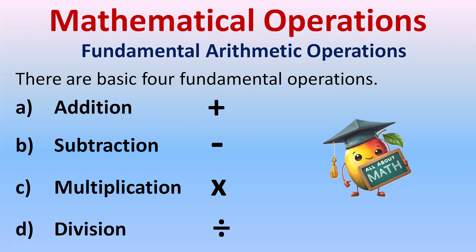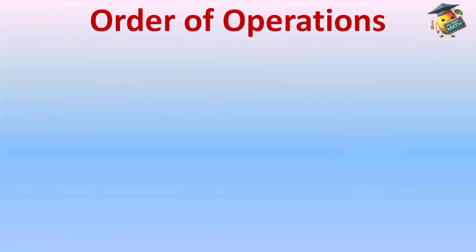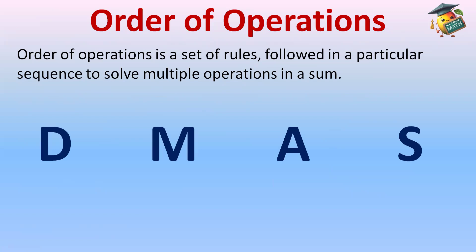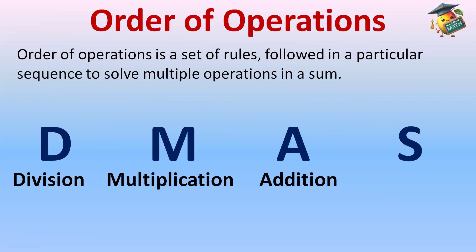What is order of operations? Order of operations is a set of rules followed in a particular sequence to solve multiple operations in a sum. In a sum you will have more than one operation — like addition, subtraction, multiplication, and division together. For that we have a rule named DMAS: D stands for division, M for multiplication, A for addition, and S for subtraction.